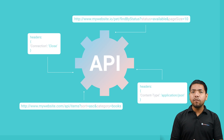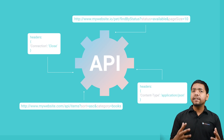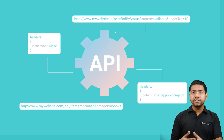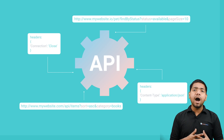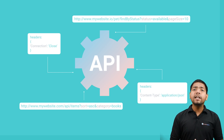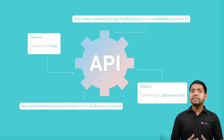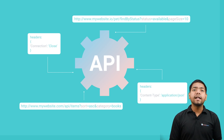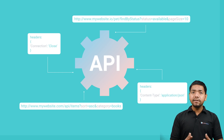Metadata includes information such as the type of data being sent, authentication credentials, or instructions on how the message should be handled. Headers are key-value pairs, where the key represents the type of information being conveyed and the value provides the specific details.